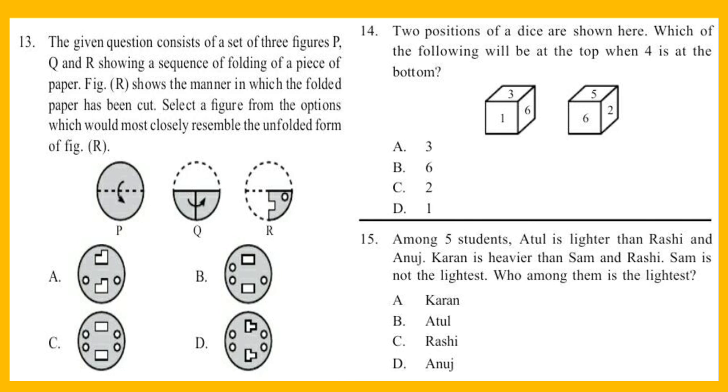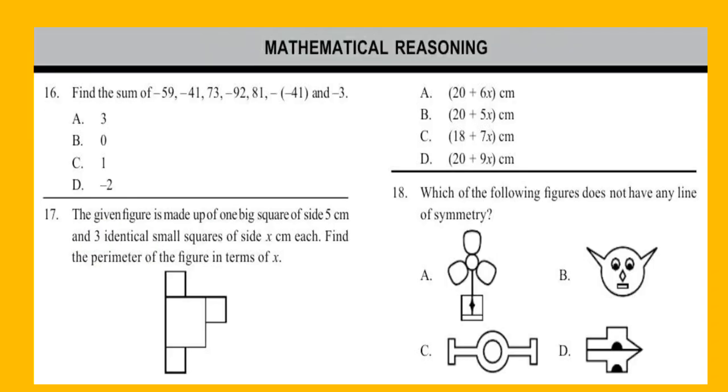Question 15: Among five students, Atul is lighter than Rashi and Anuj. Karan is heavier than Sam and Rashi. Sam is not the lightest. Who among them is the lightest? Next section is Mathematical Reasoning. Question 16: Find the sum of the given numbers.